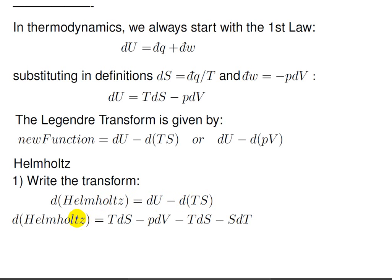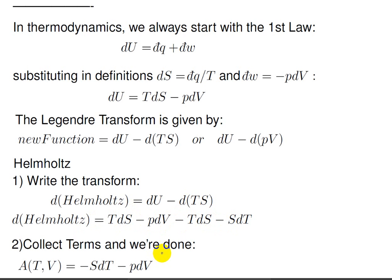So now I'm going to make the plug. The new function dHelmholtz equals the old function, internal energy: tds minus pdv — that's the du. Now I take the derivative of the conjugate ts: minus tds minus sdt. Collecting terms, tds and minus tds cancel. So I've indicated Helmholtz with an A here, and the result is dA as a function of temperature and volume, equal to minus sdT minus pdV.